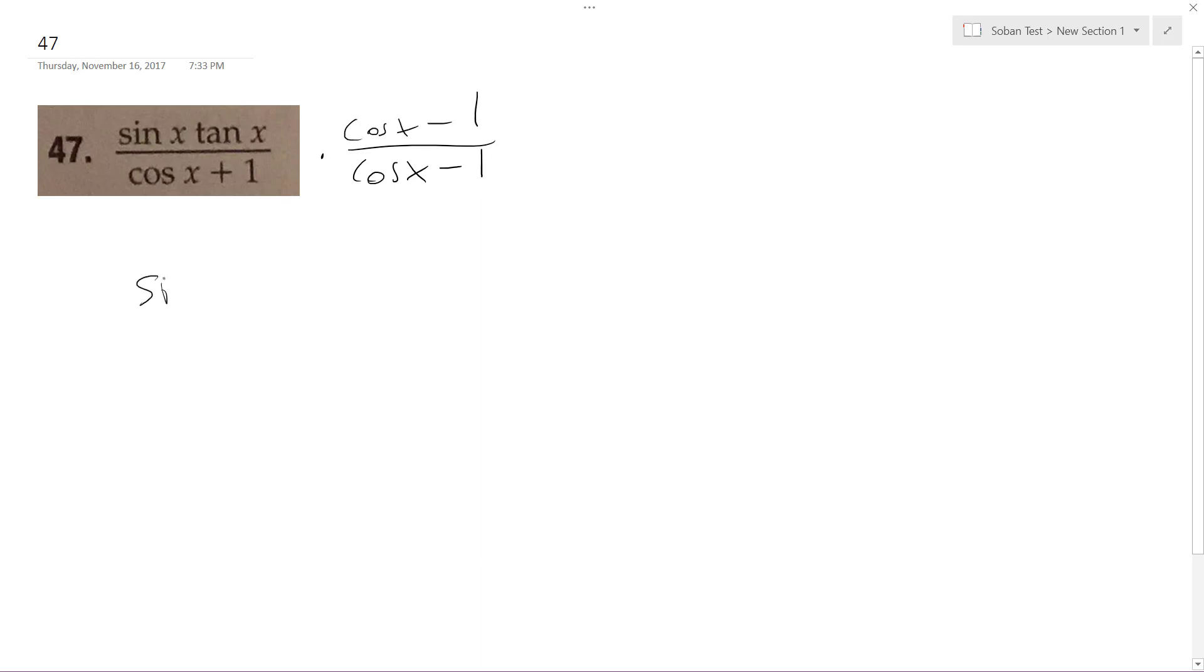So, sine x tangent x times cosine x minus sine x tangent x. Alright, and then this just becomes cosine squared x minus 1.